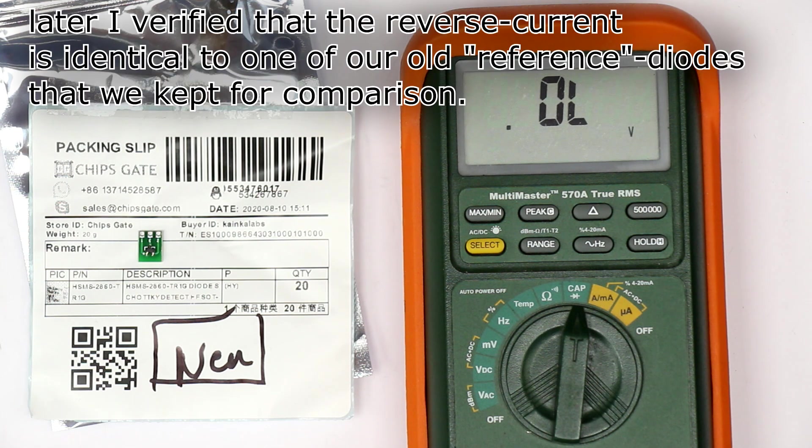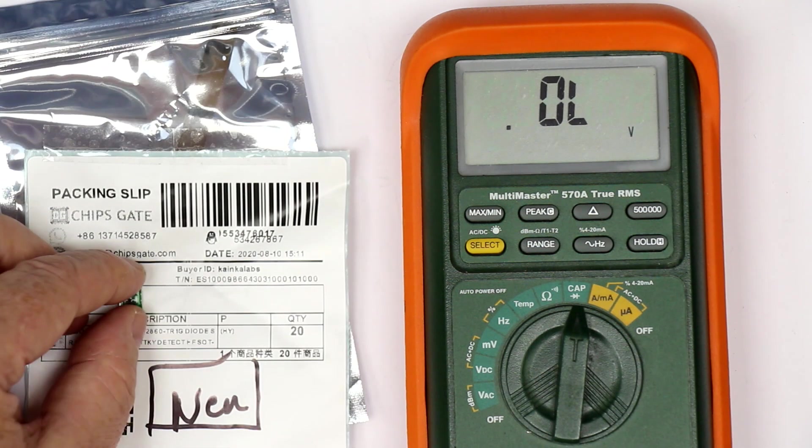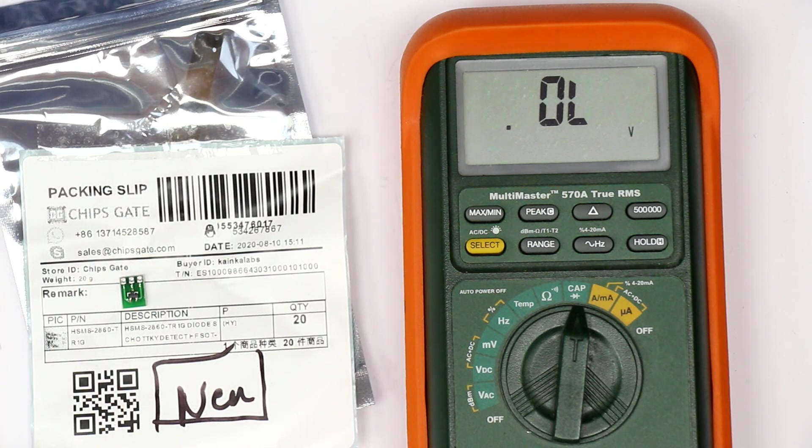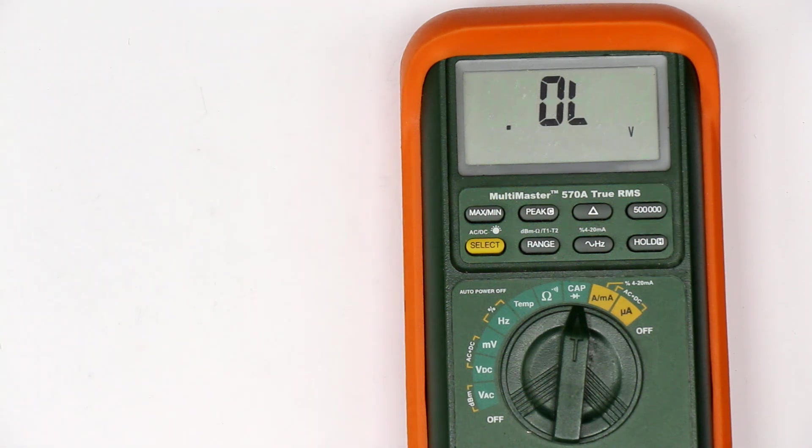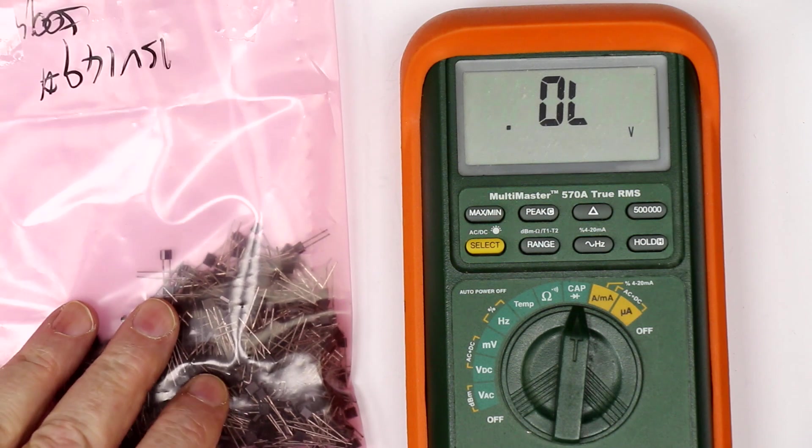That was it for today with my experience with fake chips. Beforehand I thought that only power transistors or very expensive ICs are faked in the Chinese factories, but apparently they even fake Schottky diodes and little small power FETs. In a separate video I will show you how to test Varactor diodes because I also got a batch of these 1SV149.